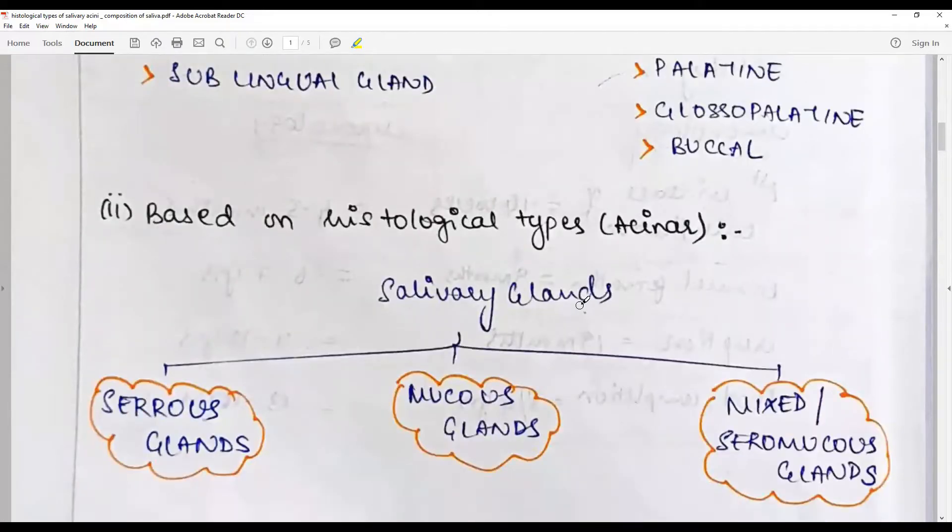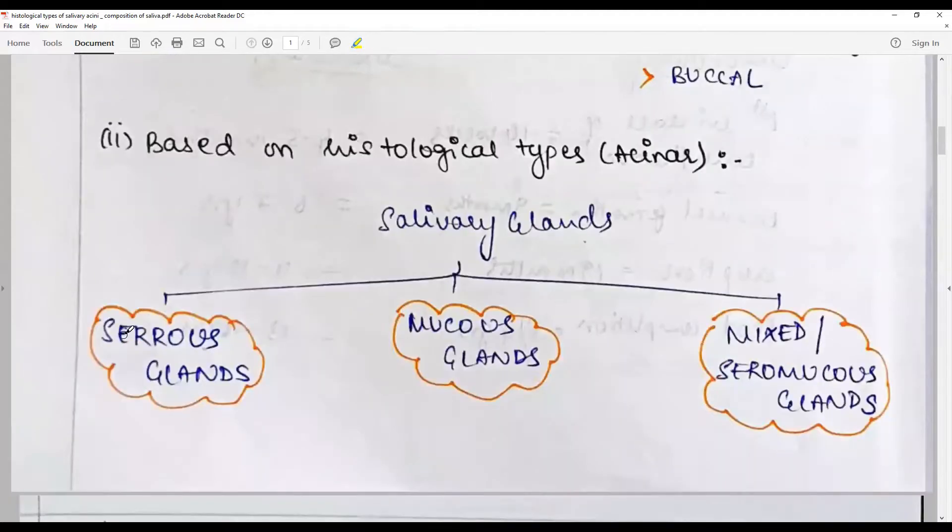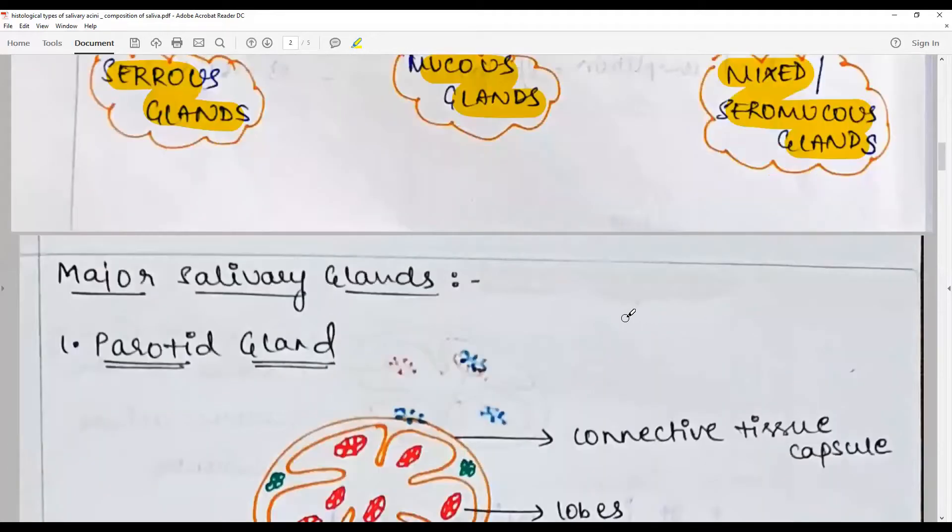Based on the histological type or the acinus, the secretory unit, salivary glands are classified as: if they have serous acini they are called serous glands, if they have mucous acini they are called mucous glands, and if they have both entities they are called mixed or seromucous glands with either serous predomination or mucous predomination.